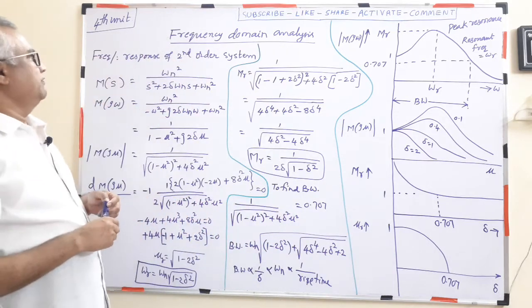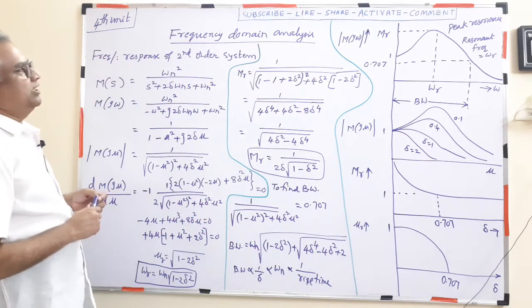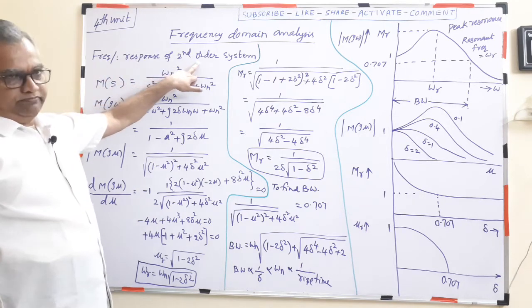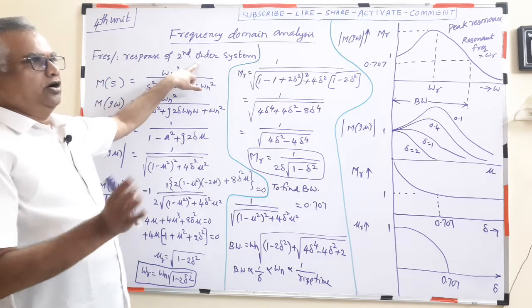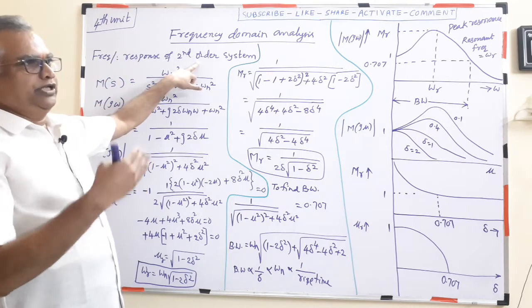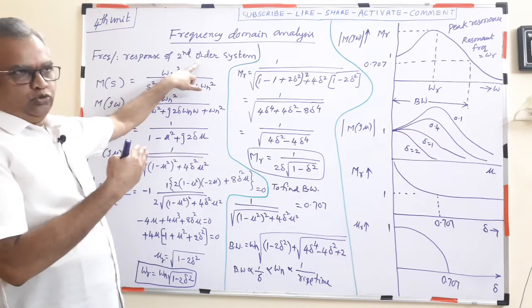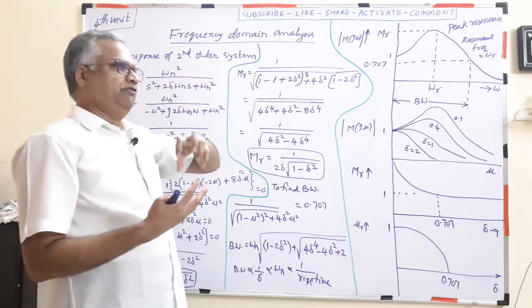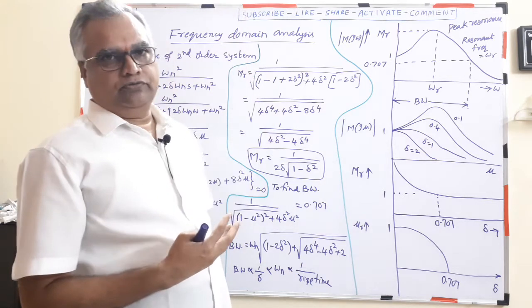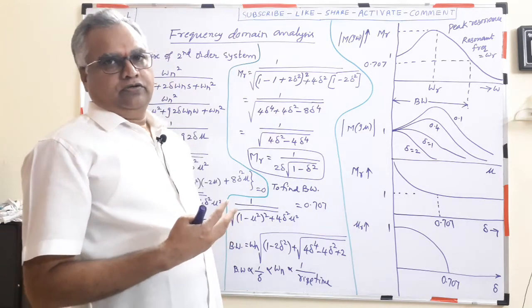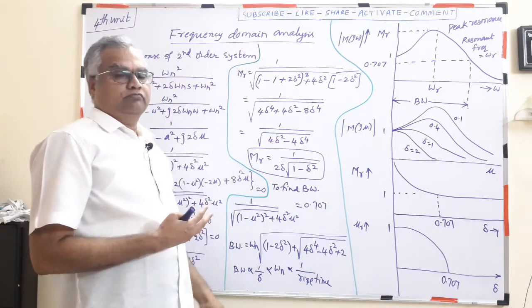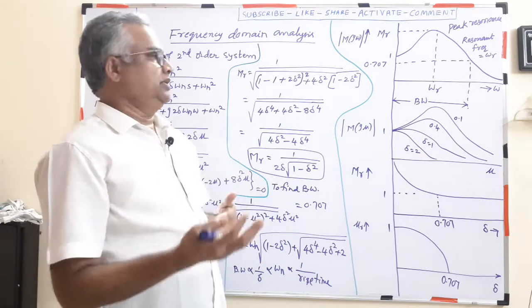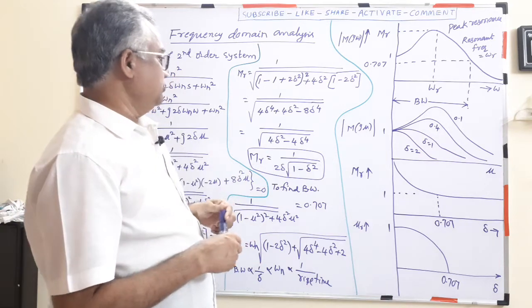In this topic, we study frequency domain analysis of a second-order system: how the gain changes, how the phase changes, at what frequency it reaches the highest value, what that highest value is, and what the bandwidth is. These are the things we are going to discuss.